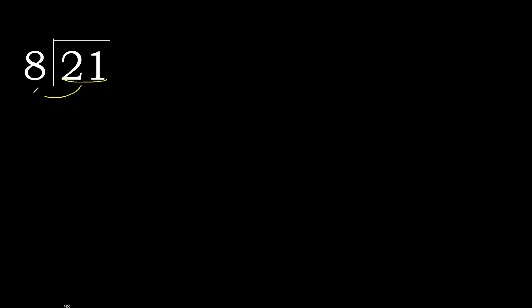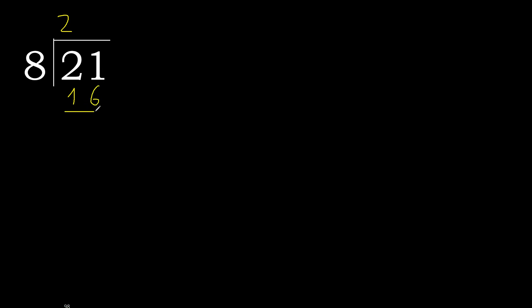21 divided by 8. 2 is less, therefore next. 21 is not less, therefore with 21: 8 multiplied by which number is nearest to 21 but not greater? 8 multiplied by 3 is 24, which is greater. 8 multiplied by 2 is 16, which is not greater. 21 minus 16 is 5.